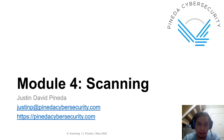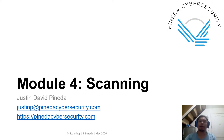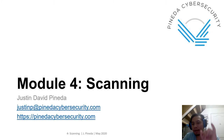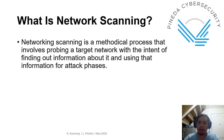Hi, this is Justin Pineda and I'm here to discuss Module 4 of the Basic Ethical Hacking Course, which is scanning. If you recall, there are five steps in the Certified Ethical Hacker under the EC Council methodology: reconnaissance, scanning, gaining access, maintaining access, and covering tracks. We'll focus on scanning for this module.